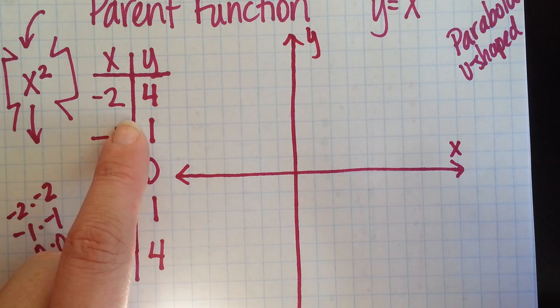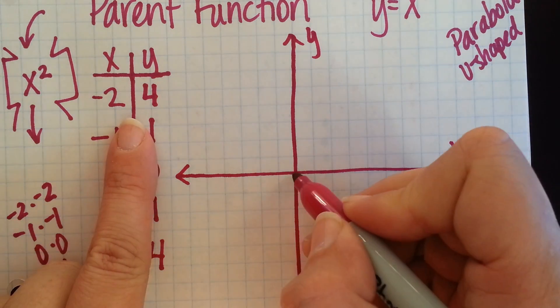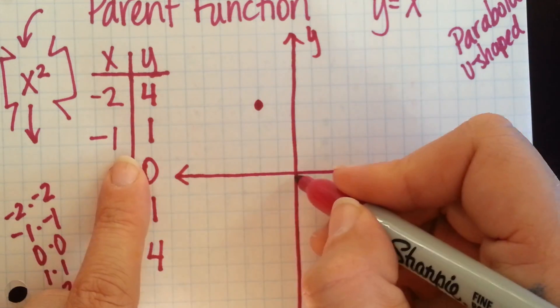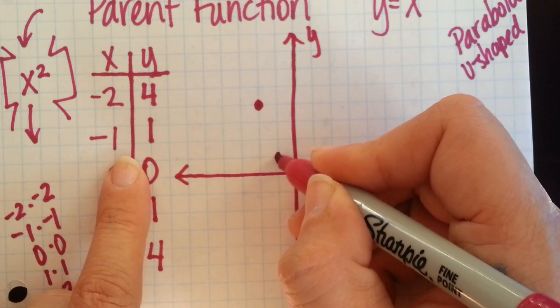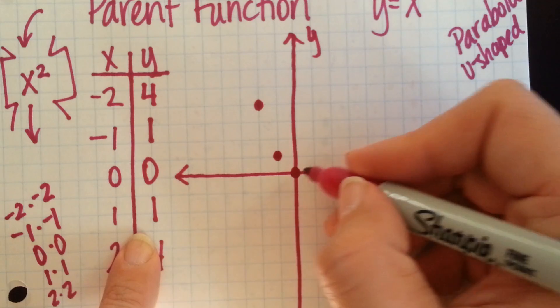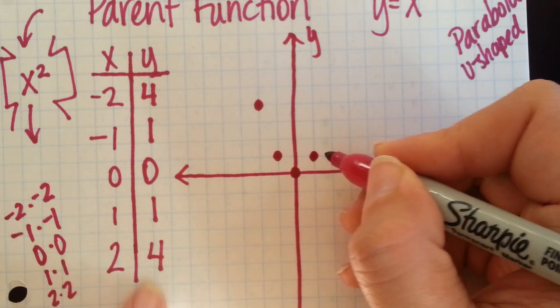And then we need to plot the points we came up with. Negative 2, 4. Negative 2, positive 4. Negative 1, positive 1. 0, 0. 1, 1. And 2, 4.